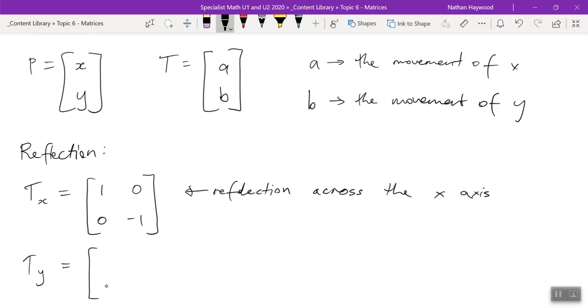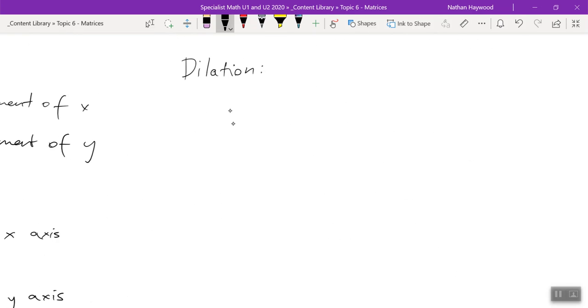What's the reflection across the Y? Two ones. So negative one, zero, zero, one. Exactly right.